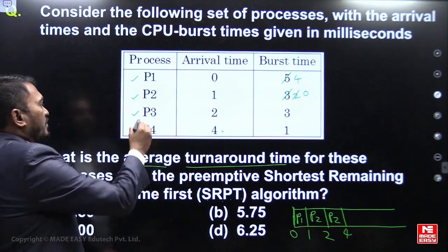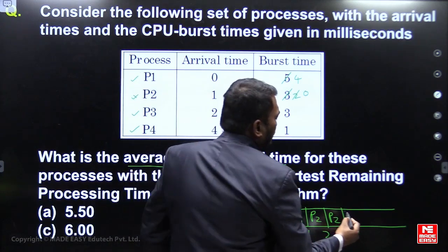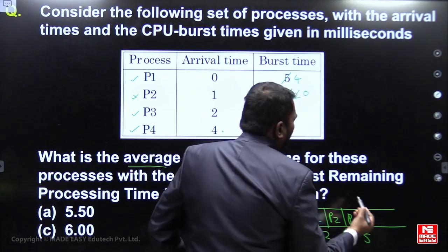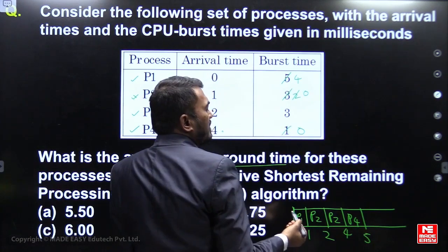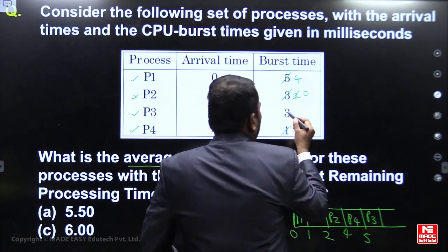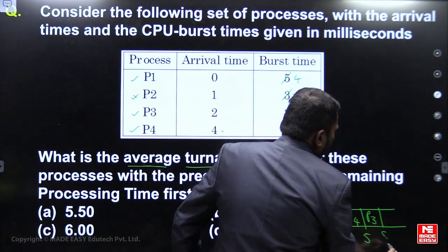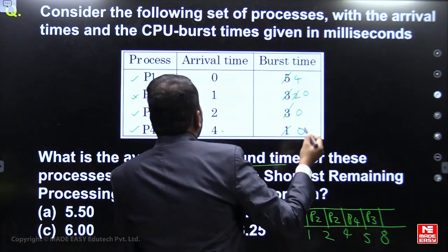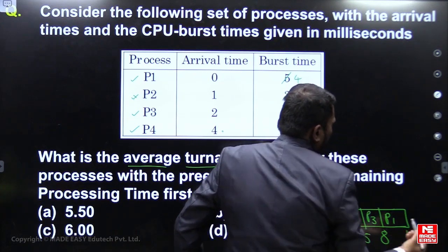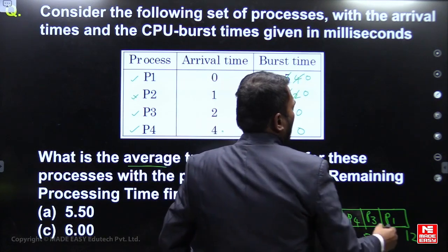P4 requires only 1 unit, completing at time 5. Next, among available processes, the shortest job is P3. P3 requires 3 units, completing at time 8. The last remaining process is P1, which requires 4 units, completing at time 12.